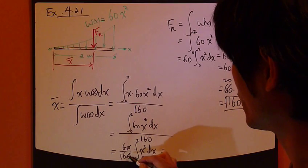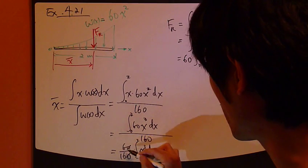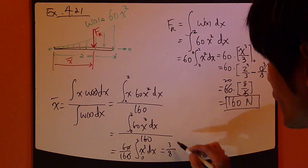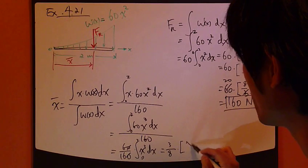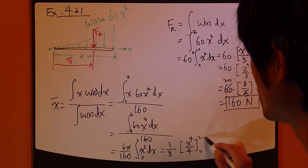So we can simplify a little bit. So I divide that whole thing by 20. So it's just 3 over 8. Times. Integrate this. So it's going to be x to the power of 4, divided by 4, 0 to 2.